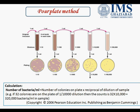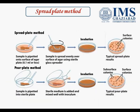Now the spread plate method. The difference between pour plate and spread plate method is: in pour plate, we first pour the sample, then add the media and incubate — resulting in two types of colonies: surface colonies and subsurface colonies. In spread plate method, we first prepare the media, then spread the sample on the media using a spreader, and incubate.